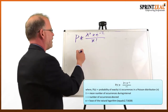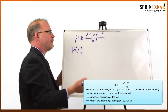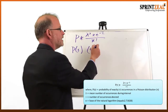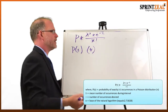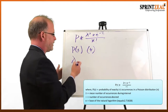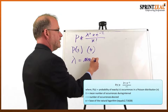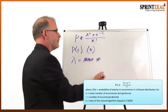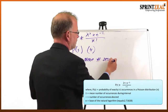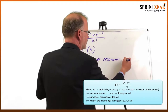The first element is P(x), which is the probability of exactly x number of occurrences — that is, the number of occurrences in a Poisson distribution. The first symbol in the formula is our mean, μ, which represents the mean of the number of occurrences during any interval. So μ is the mean of the number of occurrences during an interval.